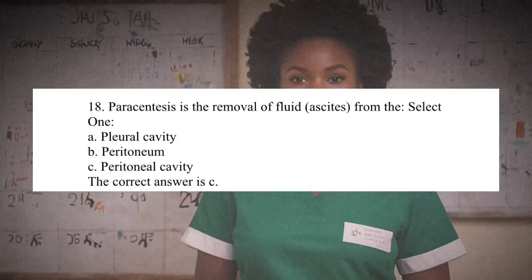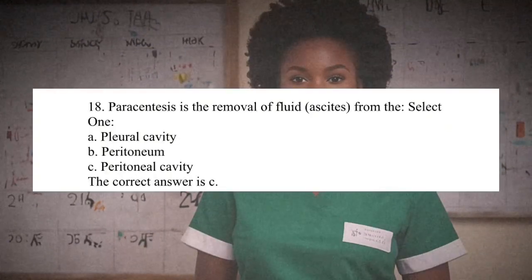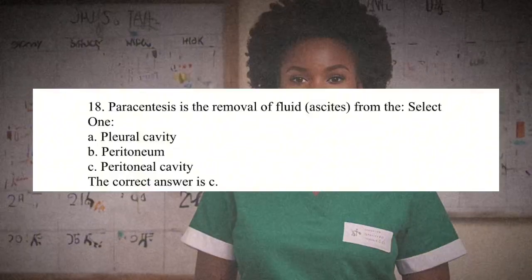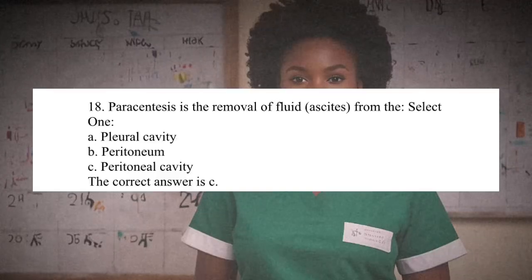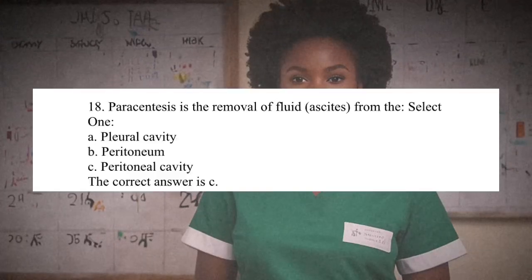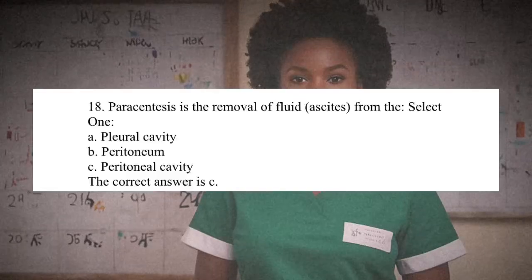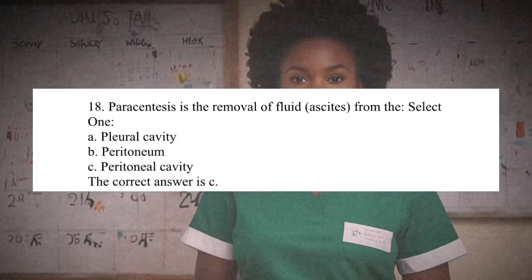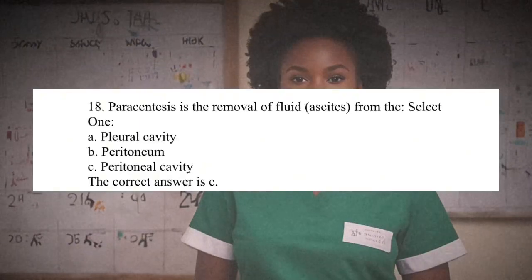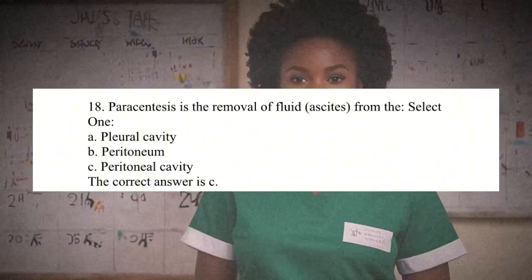Question 18: Paracentesis is the removal of fluid (ascites) from the: A. Pleural cavity. B. Peritoneum. C. Peritoneal cavity. The correct answer is C. Peritoneal cavity. Paracentesis is a procedure used to remove fluid from the peritoneal cavity, which can accumulate in conditions such as ascites.